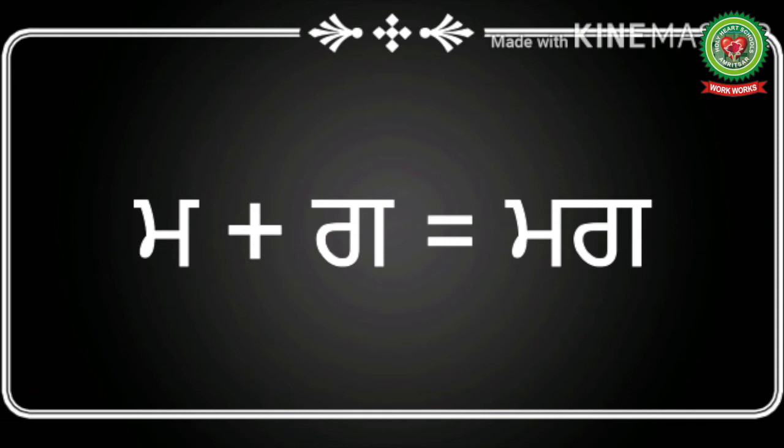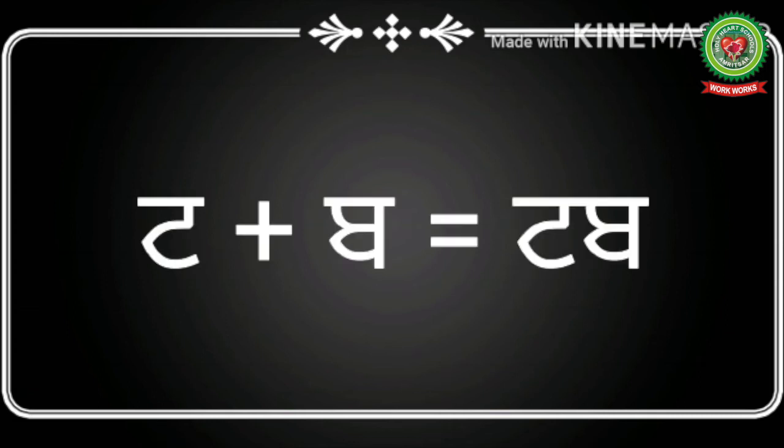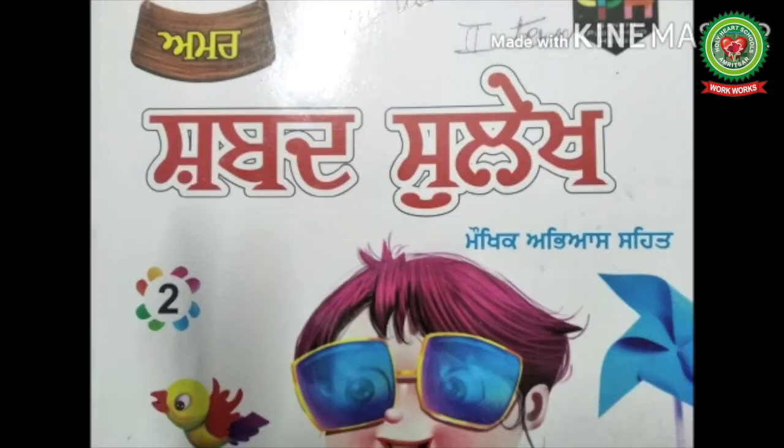Now we will do some more examples. Mamma plus Gaga equals Mug. That means we have used two letters, Mamma and Gaga, and formed the two-letter word Mug. Mug means mug. Tanka plus Baba equals Tub. Tub means tub. Now take out your Shavasu Lake book and open page number 15.